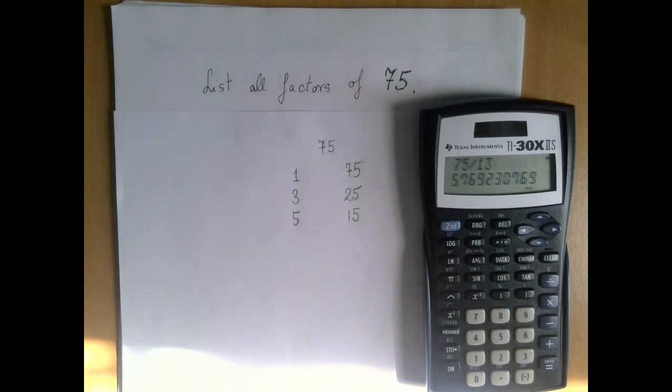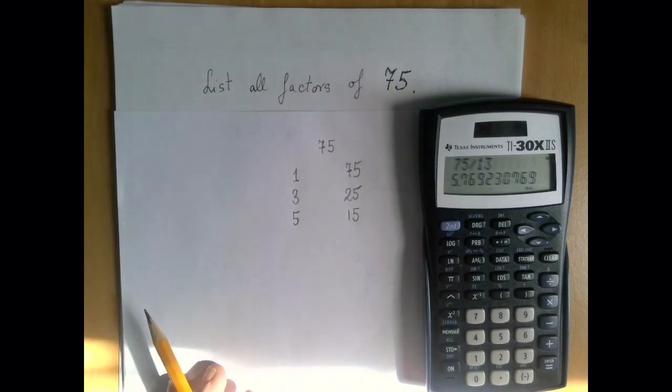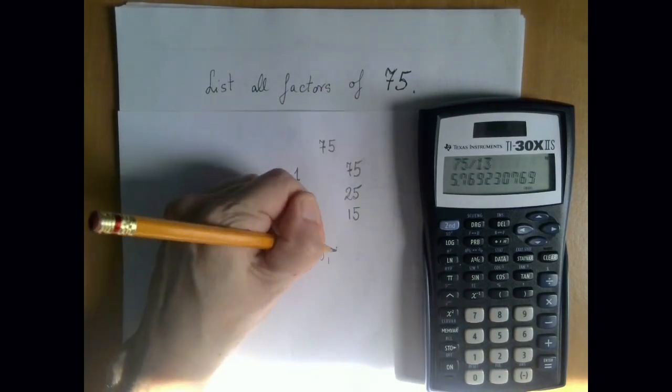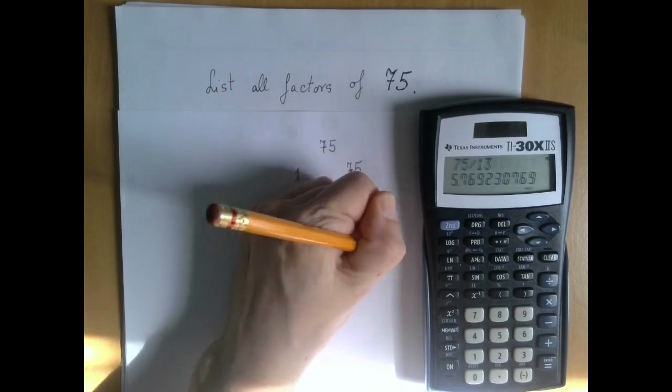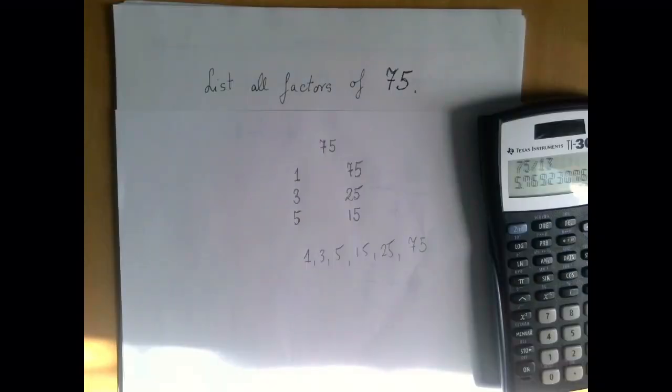So 75 has 6 divisors and those are 1, 3, 5, 15, 25, and 75.